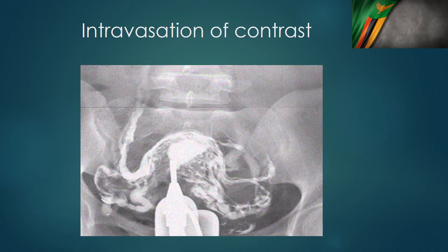This x-ray shows what can sometimes happen: when contrast is injected into the endometrial cavity with some resistance or force, it can enter the vascular system and look something like this. This is something you should not misinterpret — it is contrast that has gone into the intravascular space and is moving through the blood vessels.